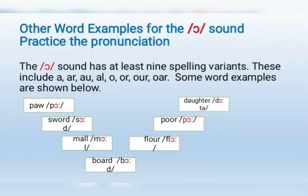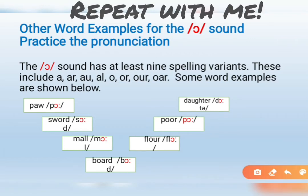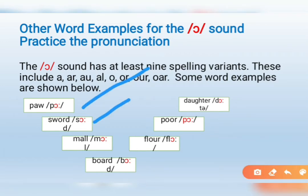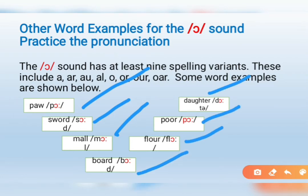Other words and examples for the AWE sound — practice the pronunciation. Remember to pause the video and practice. The spellings are: A, AR, AU, AL, OOR, OUR, OAR. Here we have some examples — repeat with me: paw, sword, mall, board, flower, poor, daughter.